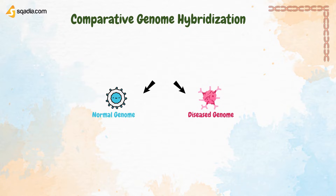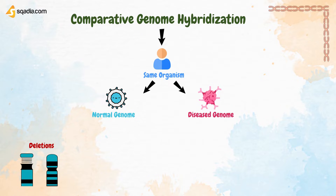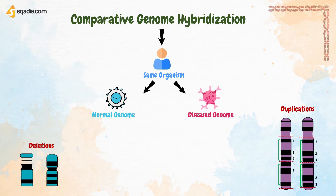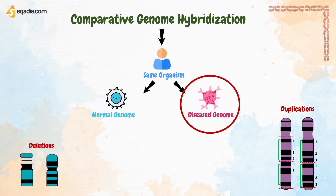Both genomes are from the same organism. Comparative Genome Hybridization can be used to detect deletions or duplications. It is based on making test DNA and control DNA compete at hybridizing to the same target. The aim of this type of hybridization is to find what type of change has occurred in the diseased genome.